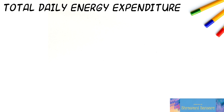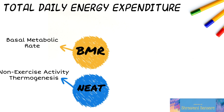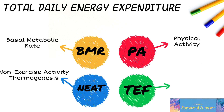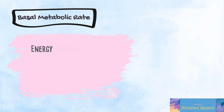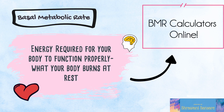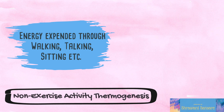The four parts of TDEE are: Basal Metabolic Rate (BMR), Non-Exercise Activity Thermogenesis (NEAT), Physical Activity, and the Thermic Effect of Food. Basal Metabolic Rate is basically the energy required for your body to function properly — the energy you burn at rest. There are plenty of BMR calculators available online. The second component is Non-Exercise Activity Thermogenesis, which is the calories you burn through everyday activities like sitting, walking, and talking.